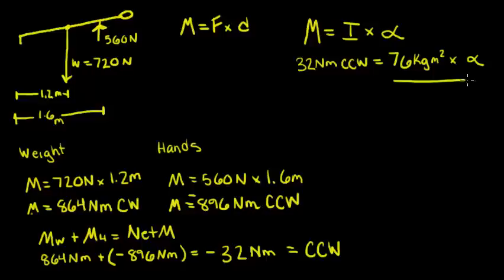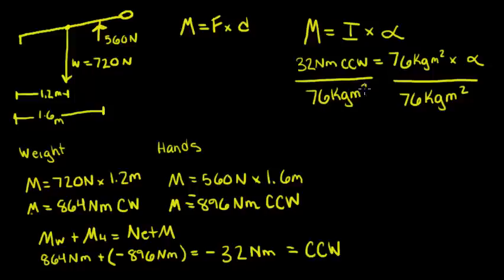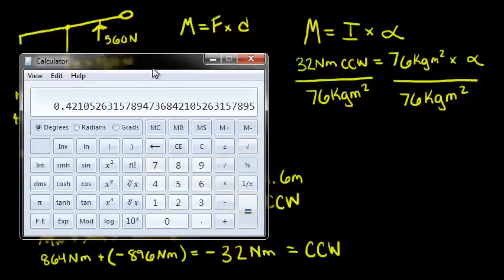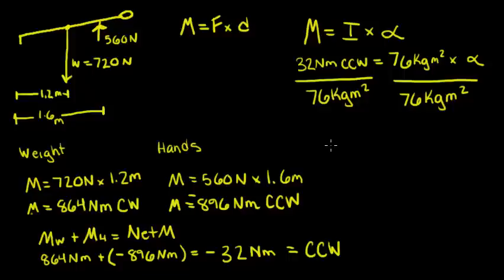We will plug this into our calculator. We find that our angular acceleration is 0.421 radians over seconds squared. This is our answer.